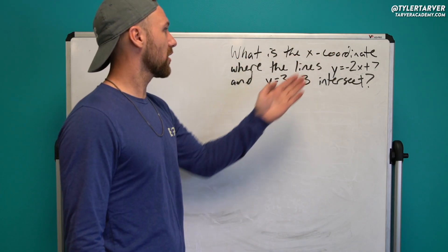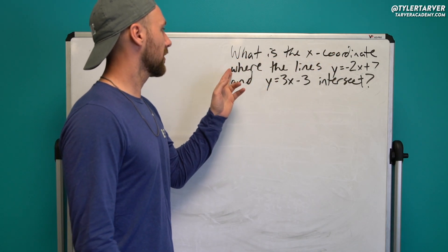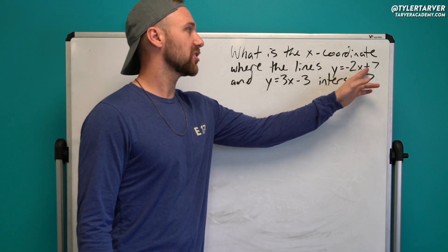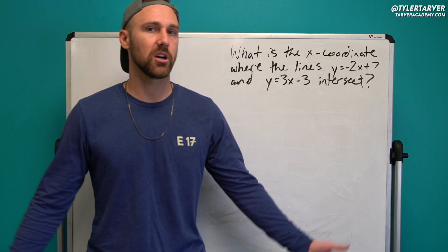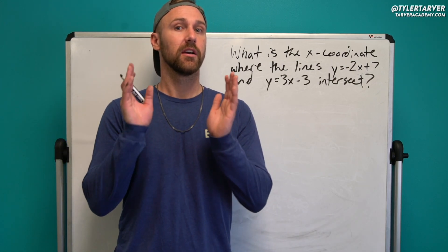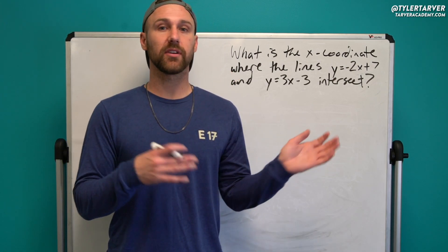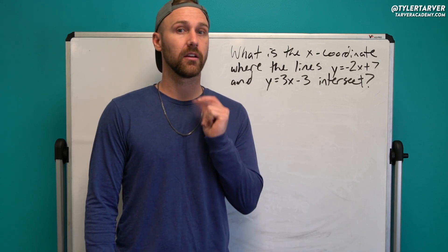What is the x-coordinate? That looks like it's probably spelled wrong. Where y equals 3x minus 3 intersect. We're talking about systems of linear equations. You don't know what that means? It sounds complicated. It's okay. Just try something. See if you can figure it out. Ready? Go.